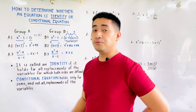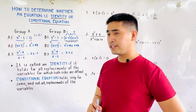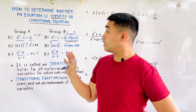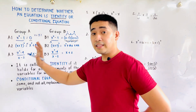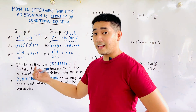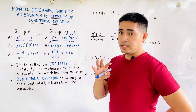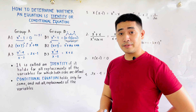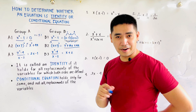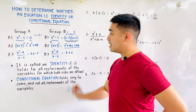How about for A2 and B2? The quantity x plus 7 squared — is it equal to x squared plus 49? No, it is not equal. But there are some values where the left side and right side will be equal, but not all values of x will satisfy this equation. The expanded form of x plus 7 quantity squared is x squared plus 14x plus 49. Therefore, the left side is equal to the right side for B2.